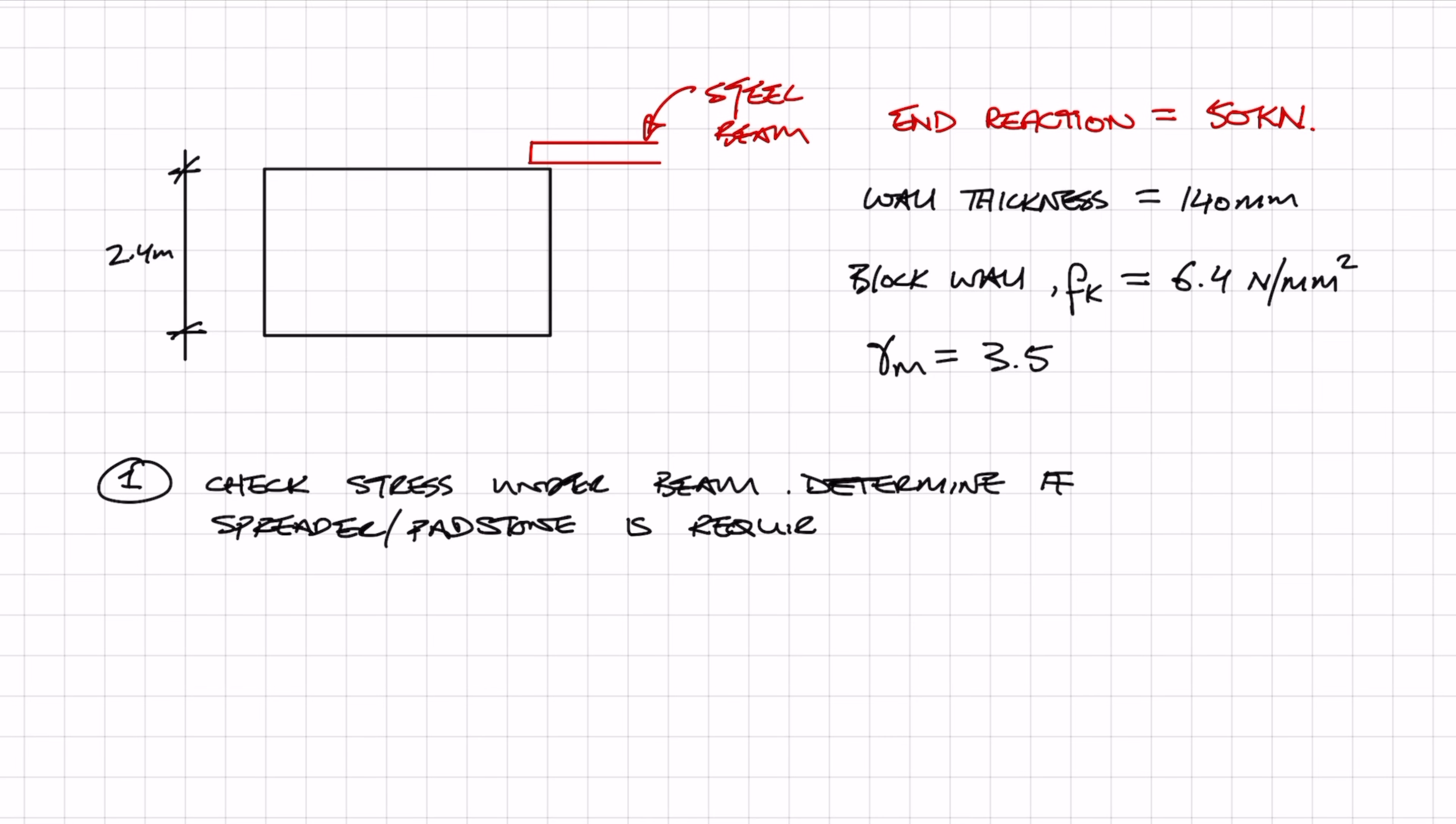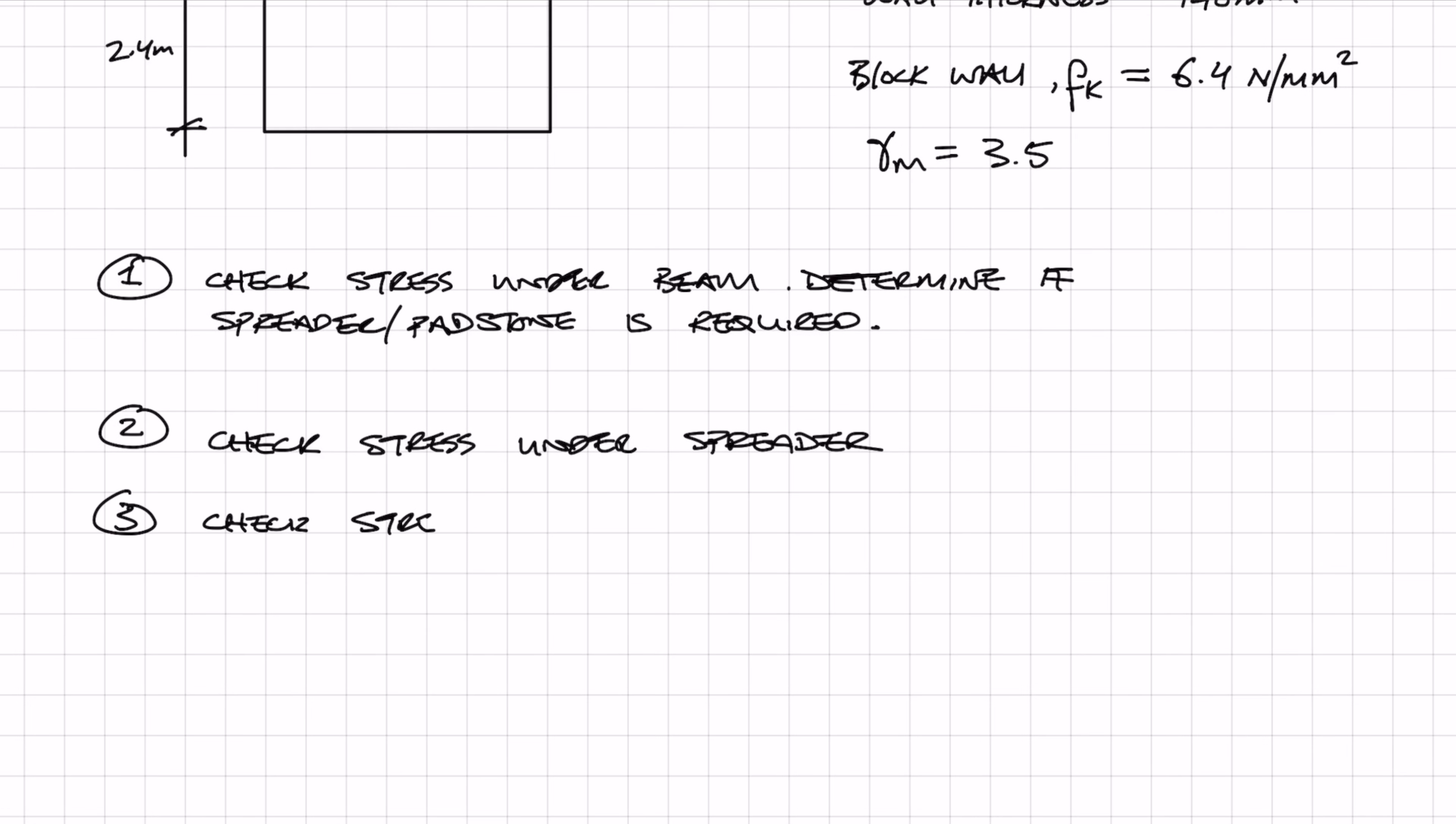If you have calculated that the stresses are too high and you need a padstone or a spreader, then you're moving on to step two, which is to check the stress underneath or below the spreader. Once you've checked this and the stresses are okay, you'll need to check the stress at 0.4h from the top of the wall. The beam is going to be bearing onto the wall by 100 millimeters and it's also going to have a 140 millimeter wide flange.